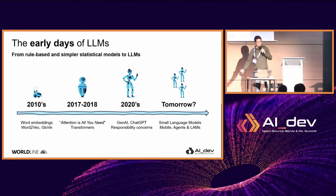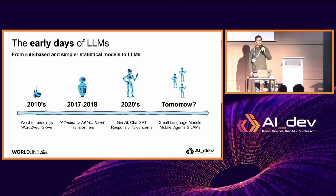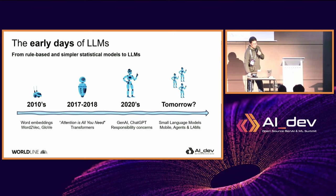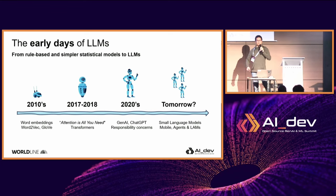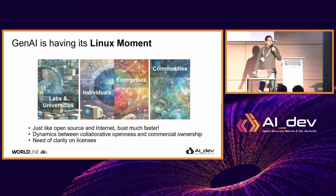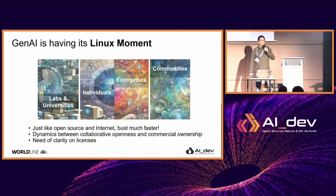The hype is not finished. It will continue tomorrow, maybe with small language models. The new frontier is the device — how to run AI on a mobile phone. You heard the announcement from Apple, for instance, about agentic AI and large action models. But let's focus now on large language models, because we're in the hype. I believe that generative AI has a Linux moment.